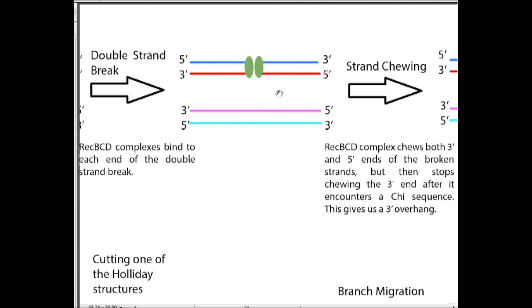That point actually happens to be after a chi sequence is encountered. When it hits a chi sequence, that's a sequence of DNA that essentially tells the REC-BCD complex to stop chewing the three prime end of the broken chromosome. It's going to stop chewing this end and this end, and continue chewing this end for a while.